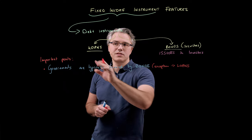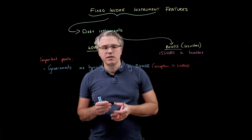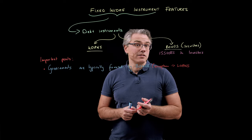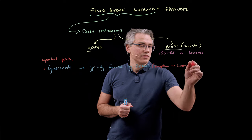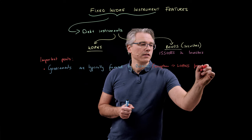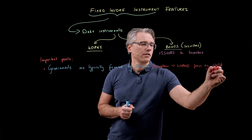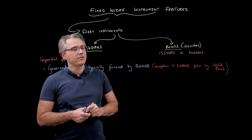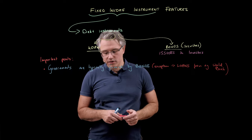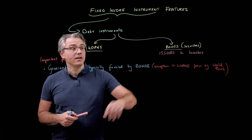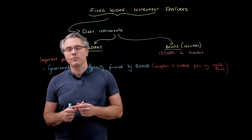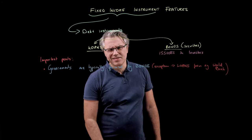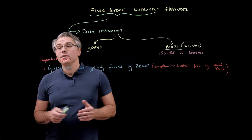Governments sometimes take loans from supranational institutions like the World Bank or the International Monetary Fund. But other than this exception, you'll typically find governments being financed by the issuance of bonds — they become issuers of bonds. Governments do not issue shares. In order to issue shares, you need to be a corporation.